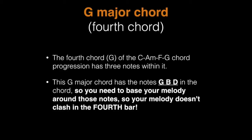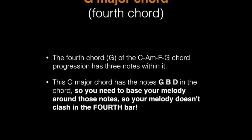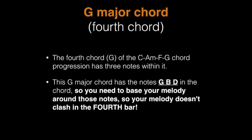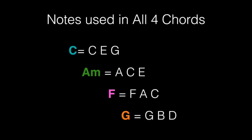Our final chord is G major as the fourth chord, and the notes within this chord are G, B, and D, so you'll need to base your melody around these notes in the fourth bar so you don't have any clashes. Here's an overview of all the notes that are in each of these chords — the C, A minor, F, and G chords.